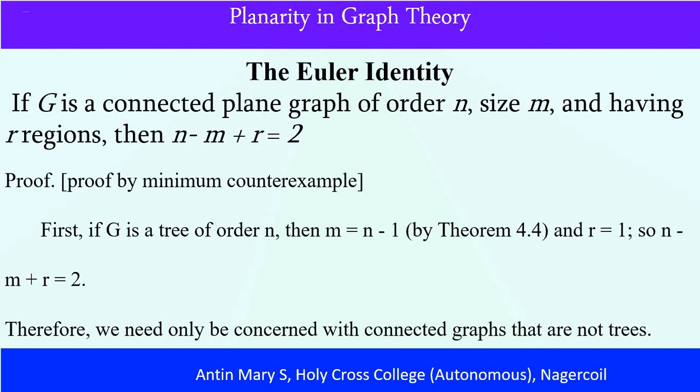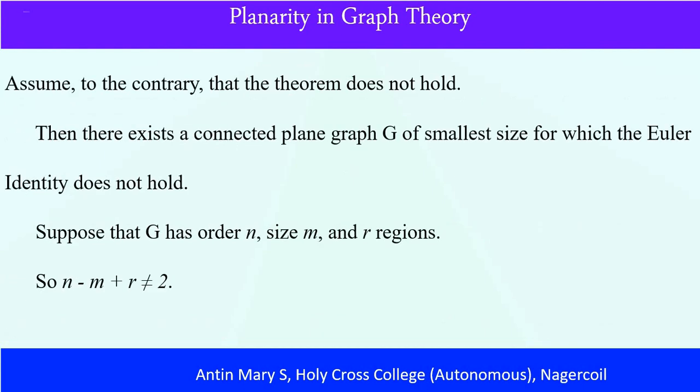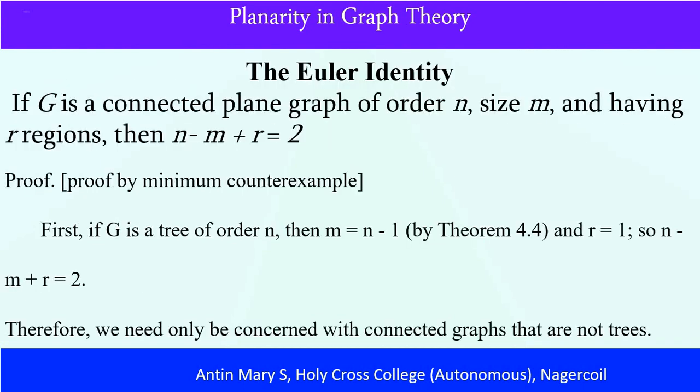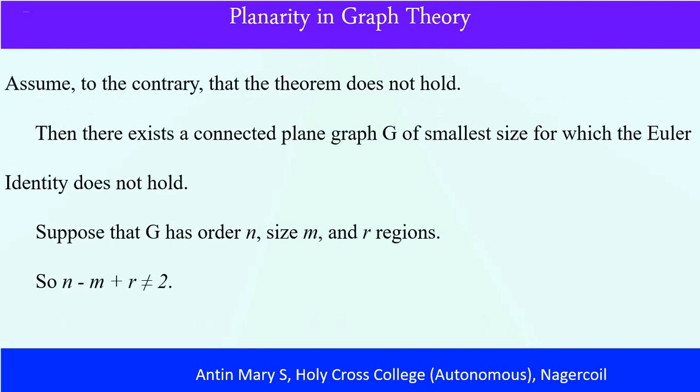We are dealing with connected graphs that are not trees. We are going to show this satisfies n minus m plus r equals 2. But suppose it does not satisfy. Then there exists a connected plane graph G of smaller size for which the Euler identity does not hold—that means n minus m plus r not equal to 2. We have to understand the smaller size concept.